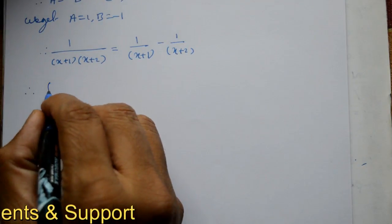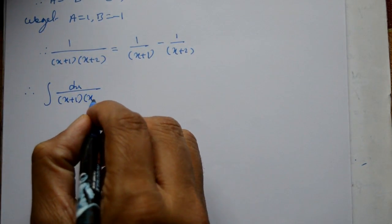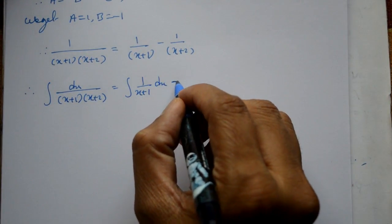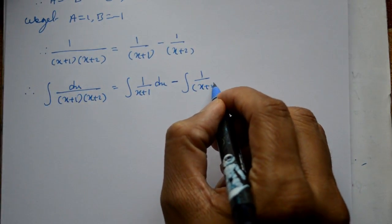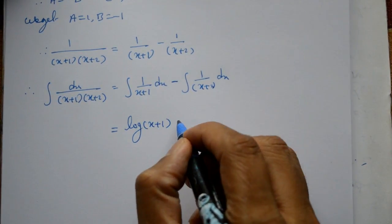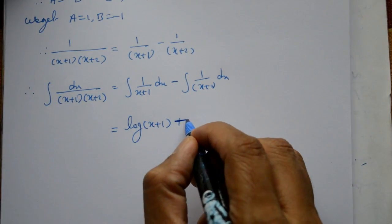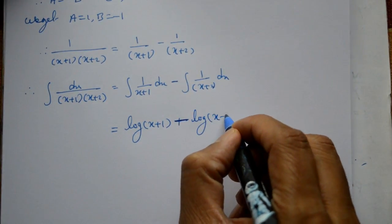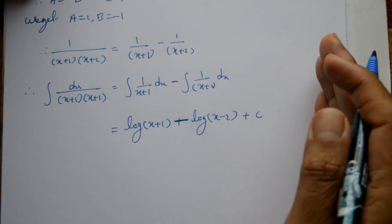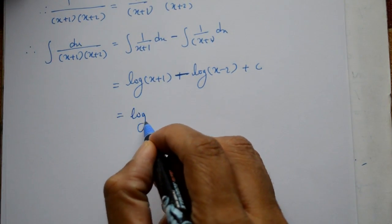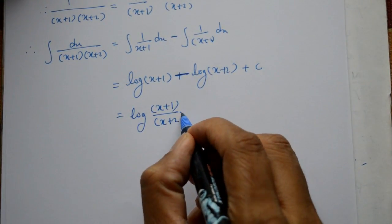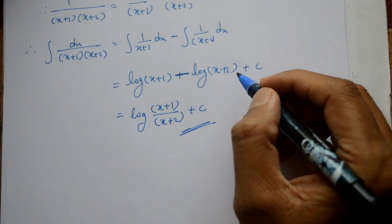Integration dx/(x+1)(x+2) dx, that is integration 1/(x+1) dx minus integration 1/(x+2) dx. That is log of (x+1) minus log of (x+2) plus C. You know the property log a minus log b is log a by b, that is log of (x+1) divided by (x+2) plus C. Now this is required solution.